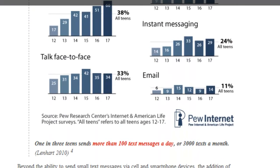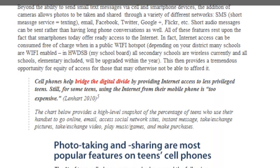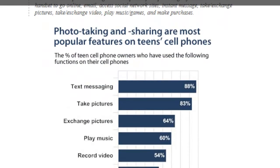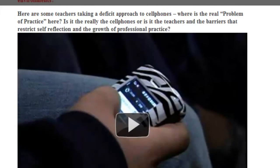We also talked about how teens primarily use their phones for text messaging, pictures — taking and exchanging them — playing music, recording video, and playing games, according to the Pew Research and Technology Group. Notably, teens don't like to email. All of these activities can be captured and harnessed for learning as well.